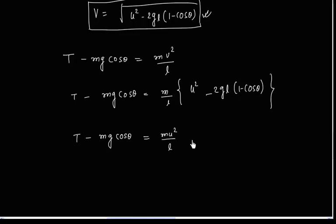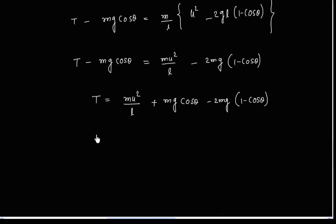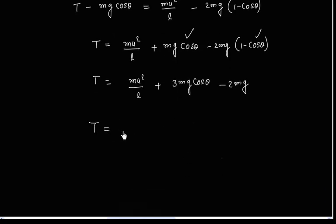Multiply by m by L. So let us take mg cos theta to the right side. So we will have 3mg cos theta minus 2mg.